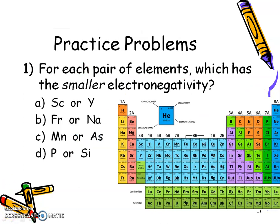Now let's look at practice problems. Get out your periodic table. For letter A, find scandium (Sc) and yttrium — they're in the same group. Since electronegativity decreases going down a group, yttrium has the smaller value. For letter B, Francium and sodium are also in the same group; going down, Francium has the smaller electronegativity value.